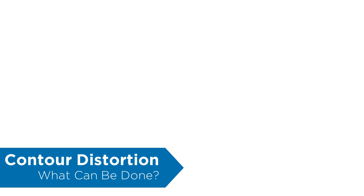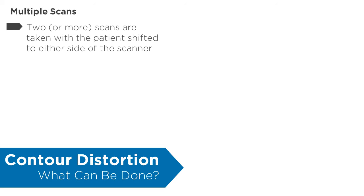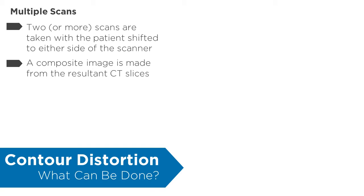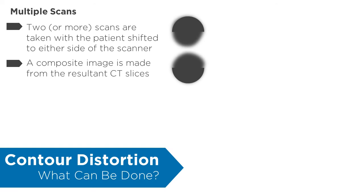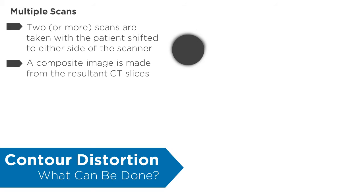Here are some common strategies for dealing with image distortion. Multiple scans can be taken with the patient shifted all the way to the left and to the right of the bore, so that each part of the region of interest is imaged within the scan field of view. A composite image can be made by putting together the undistorted parts of each CT slice.